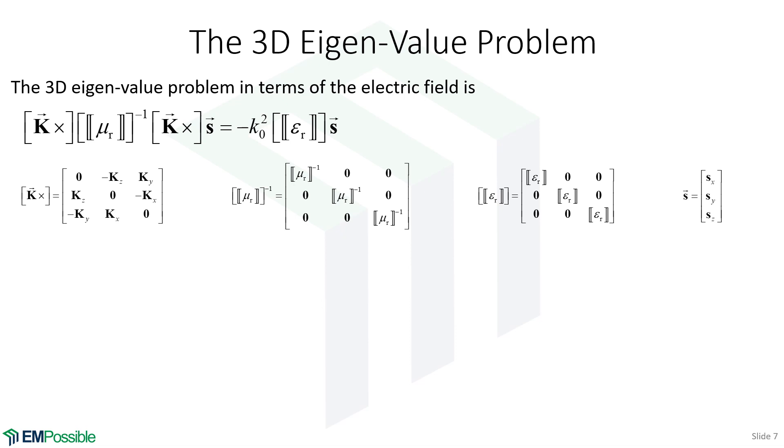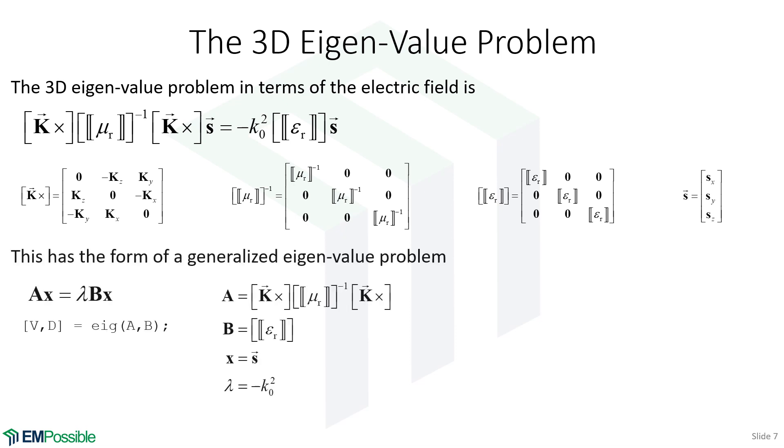If we stare at this long enough, we will realize this actually is an eigenvalue problem. It's a generalized eigenvalue problem. Generalized meaning there's another square matrix over here. Lambda here is not wavelength, it's the eigenvalue. But we have a matrix over here, so we have a generalized eigenvalue problem. So we have an A and a B. You can imagine in a computer programming language, building your K matrices, building your convolution matrices, building A and B. And then in MATLAB, calling EIG. And out comes eigenvectors V and eigenvalues D.